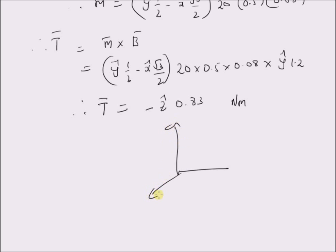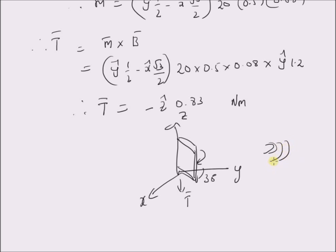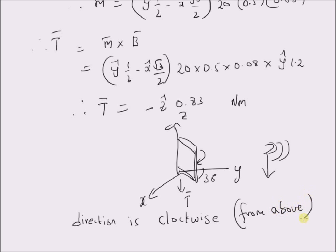Since the torque is in the negative z direction, and the loop is positioned here, when we use the right-hand thumb rule and view the loop from the top, the direction of rotation should be clockwise. This is the direction of rotation corresponding to the torque in the negative z direction. So the loop should be moving clockwise from above. Thus, we can calculate the torque due to a magnetic field on a rectangular loop.